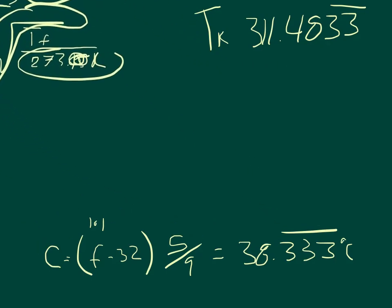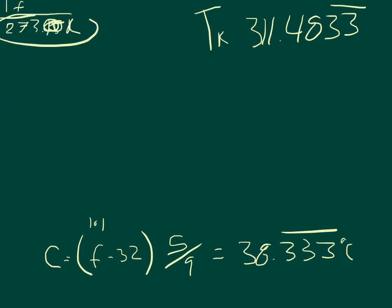So I'm just going to move all this out of the way, and we're going to rewrite our equation. So the velocity is equal to 331 times the square root of the t final. So we can say t final is 311.4833 divided by 273.15.